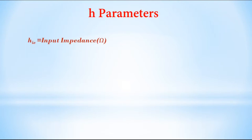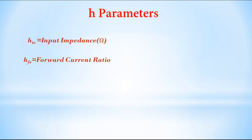They are HIE, input impedance, measured in ohms. HFE is called the forward current ratio. It has no units because both numerator and denominator have the same parameter — current, measured in amps — so they cancel. HRE is called the reverse voltage ratio. Since it is also a ratio between two voltages, it does not carry any units.